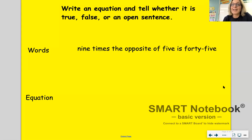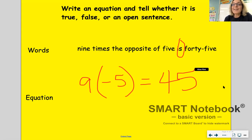So we're going to write an equation to match those words. So 9 times, and if you remember, we don't want to use an x for multiplication anymore. 9 times the opposite of 5, which is negative 5, is, that word is, is another way of saying equal 45. So that equation matches those words.